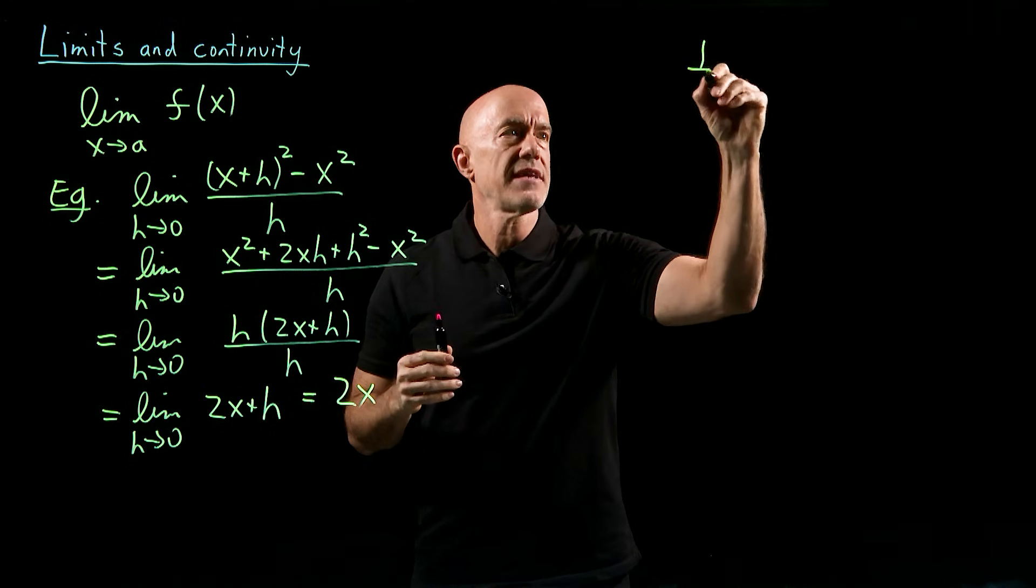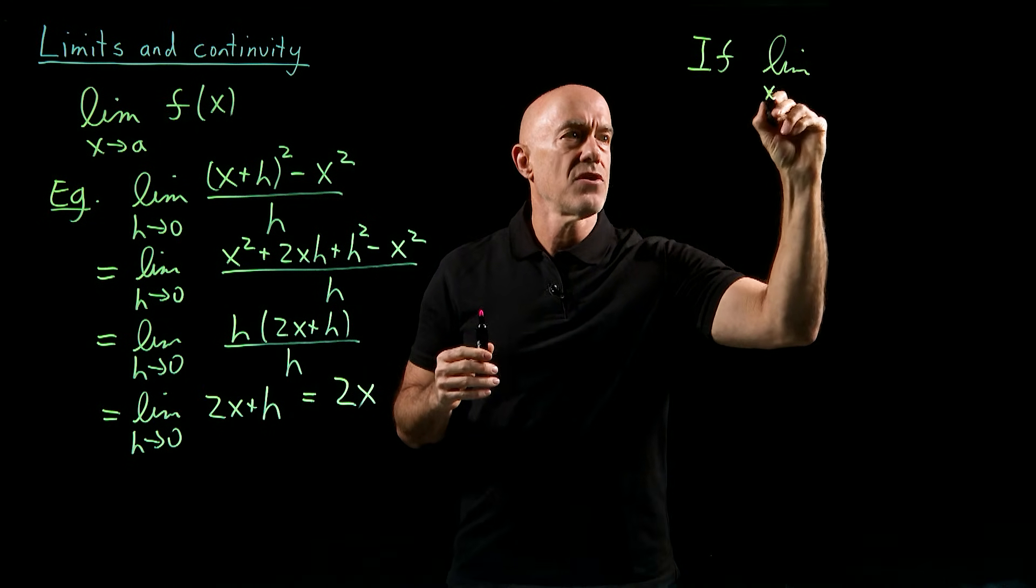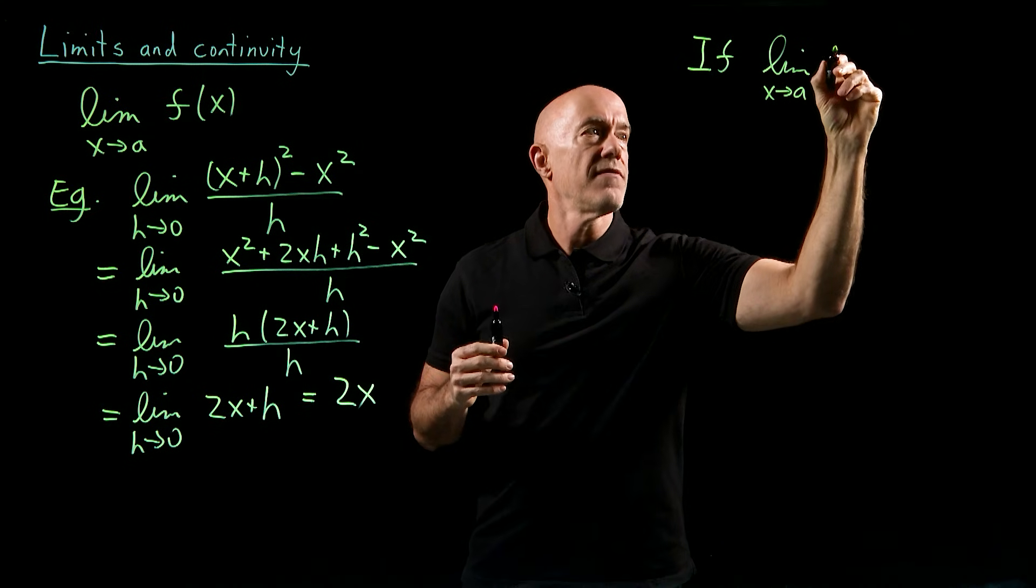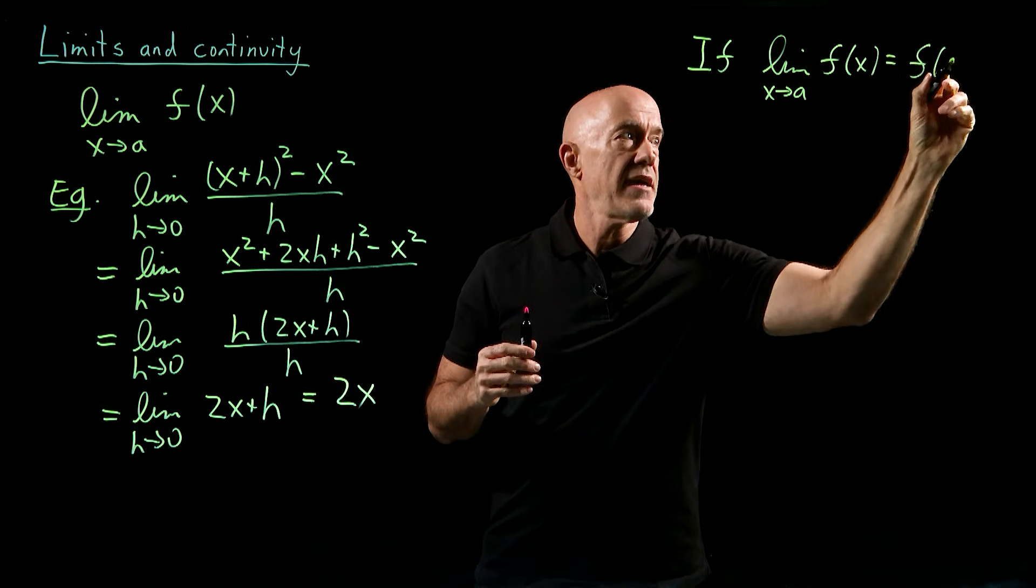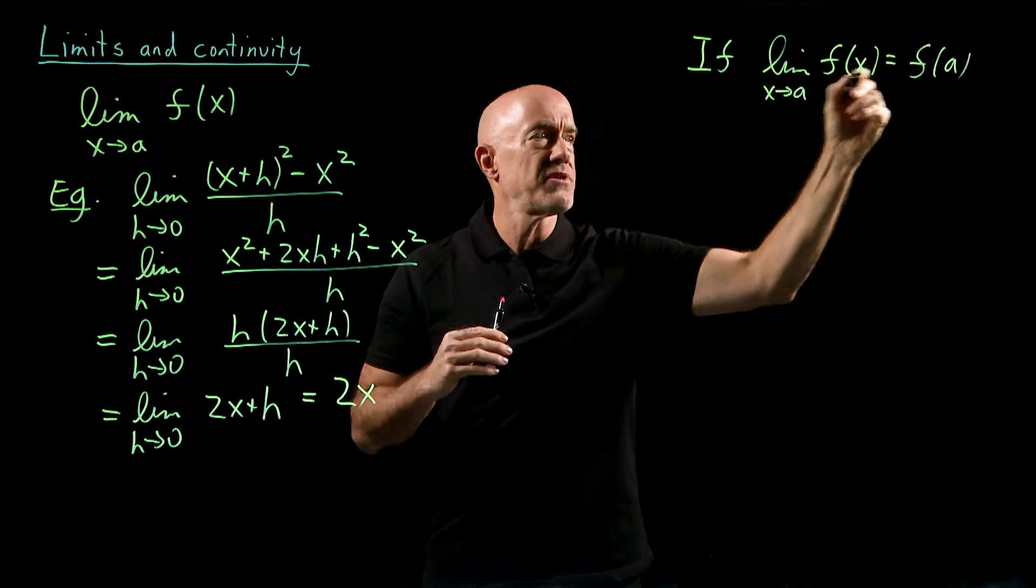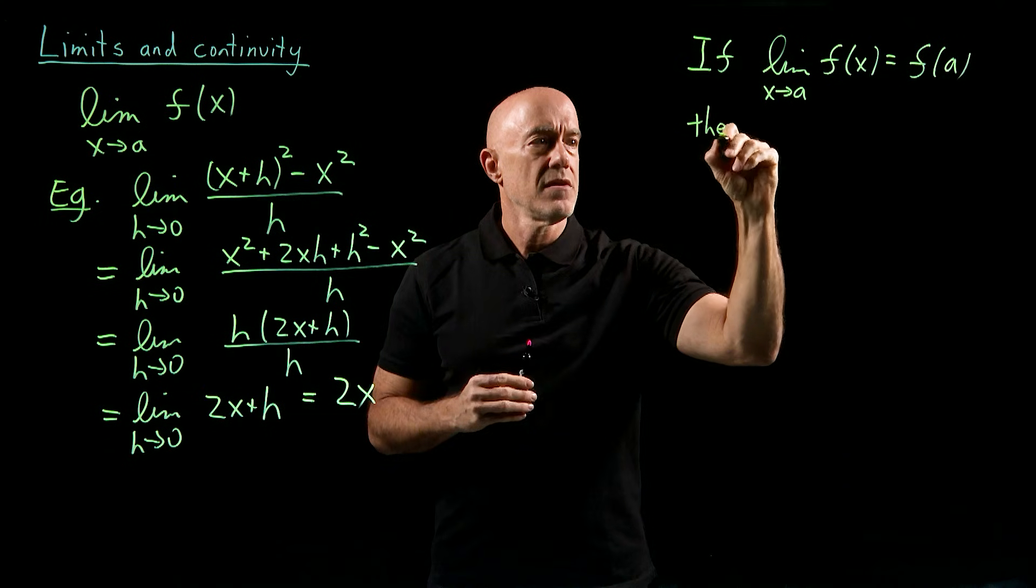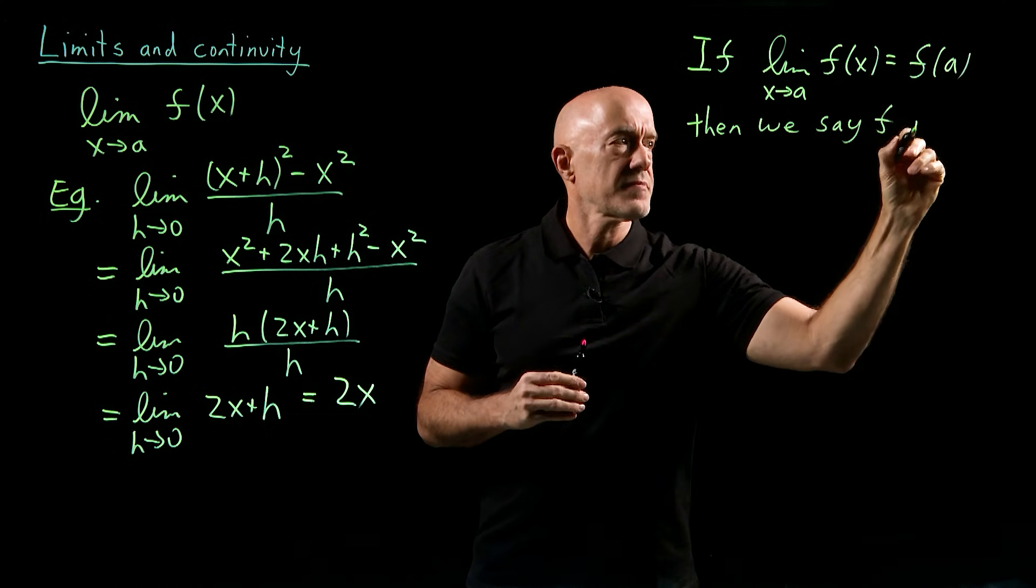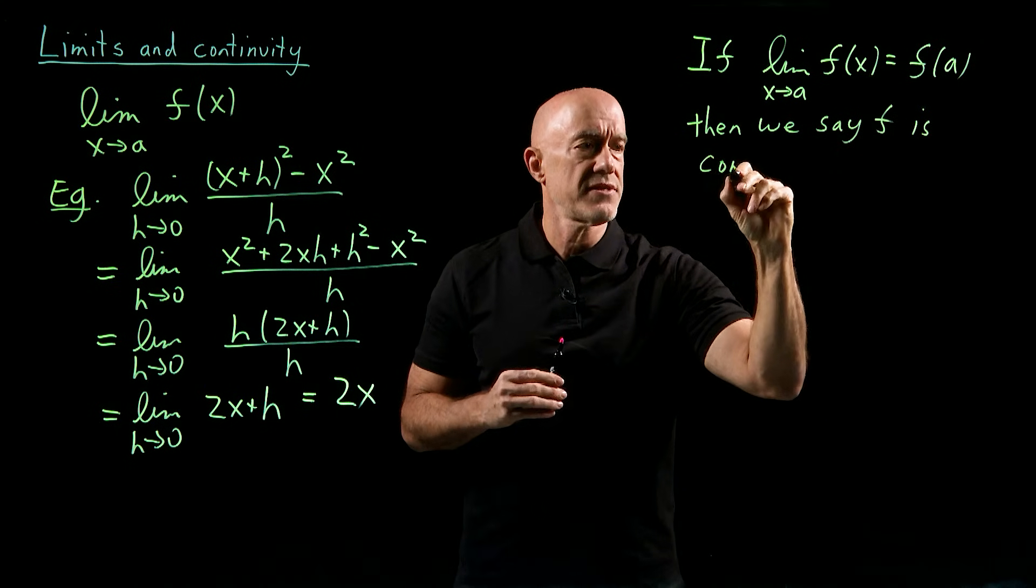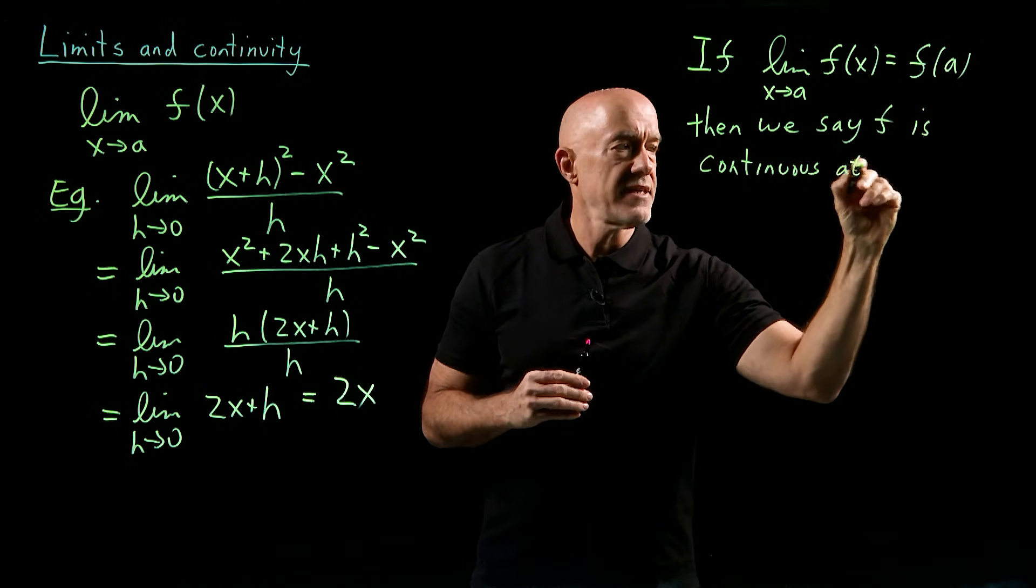If, for example, the limit as x goes to a of f(x) is equal to f(a), so we can just substitute in x equals a, then we say f is continuous at x equals a.